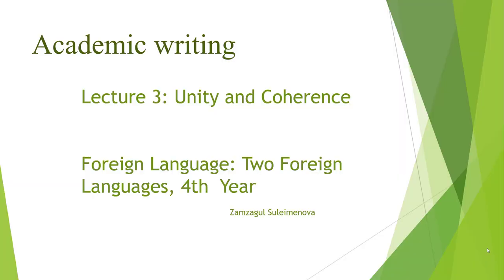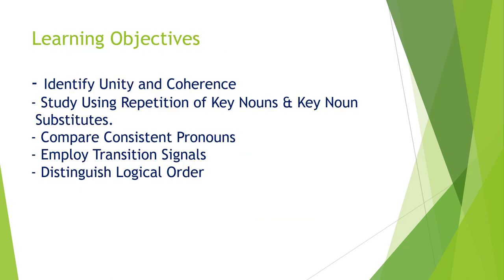Academic Writing, Lecture 3: Unity and Coherence. Learning objectives: identify unity and coherence, study using repetition of key nouns and key noun substitutes, compare consistent pronouns, employ transition signals, and distinguish logical order.